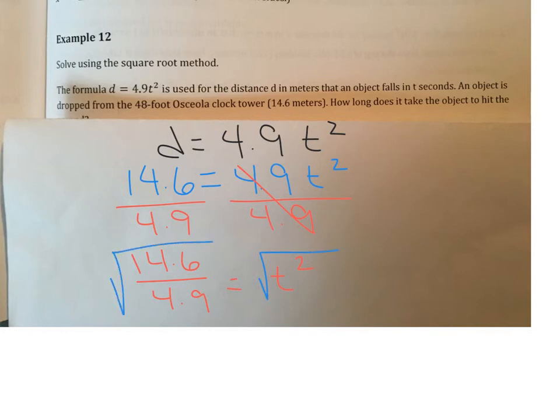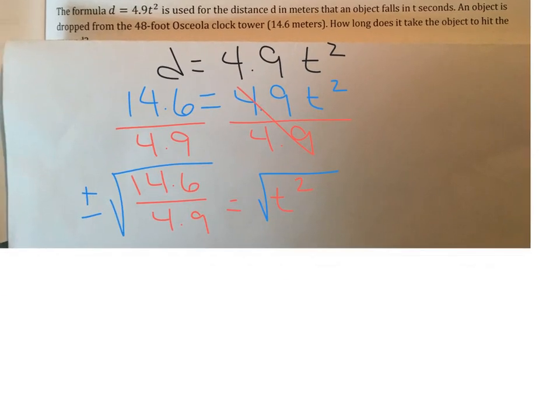And I'm going to use a radical on this side too. And don't forget, that generates the plus minus sign. However, we're looking for time. How long does it take the object to hit the ground? Time can't be negative. So you can disregard the negative part of this answer already because time can't be negative. So when you put this into your calculator, the radical, then your decimal, 14.6 divided by 4.9, hit the equal sign, you're going to get approximately 1.7.